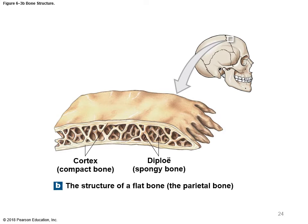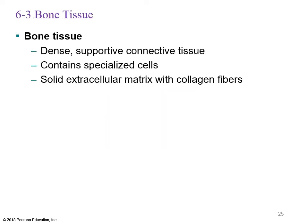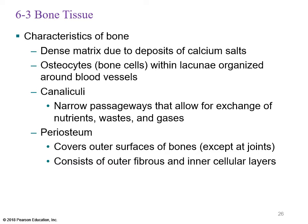Bone tissue is dense, supportive connective tissue containing specialized cells and a solid extracellular matrix with collagen fibers. Bone is not just calcium salts — if it were, it would be like chalk and just break. The proteins, in the form of collagen fibers, give bone resilience. Cells called osteoblasts lay down an osteoid matrix that then becomes crystallized with minerals. The characteristics of bone include a dense matrix due to calcium salts, and osteocytes — mature bone cells — trapped within lacunae, organized around blood vessels.